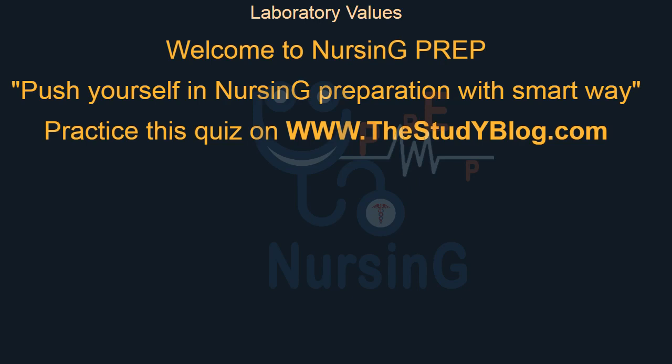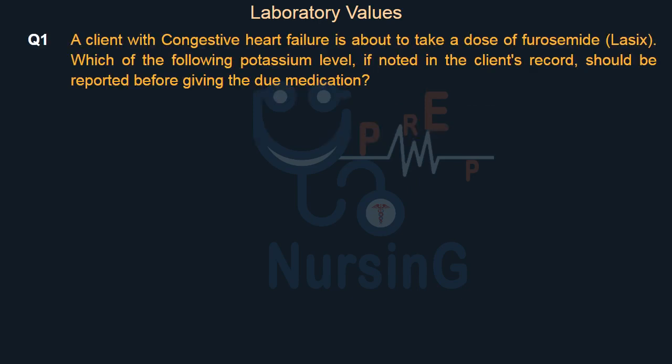Laboratory Values. A client with congestive heart failure is about to take a dose of furosemide (Lasix). Which of the following potassium levels, if noted in the client's record, should be reported before giving the medication?